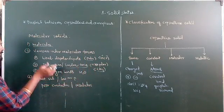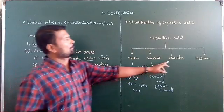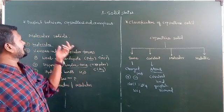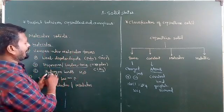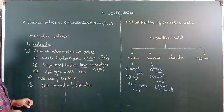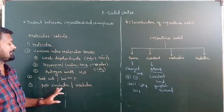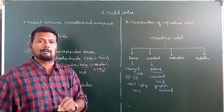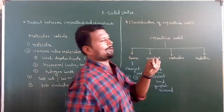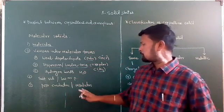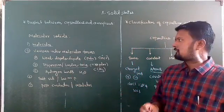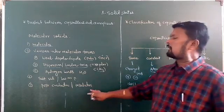An example of hydrogen bonding in molecular crystalline solids is H₂O. Molecular crystalline solids are very soft substances with very low melting points. They are poor conductors of electricity and are used as insulators.